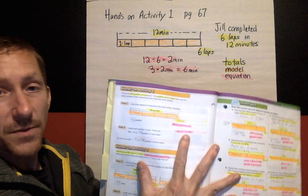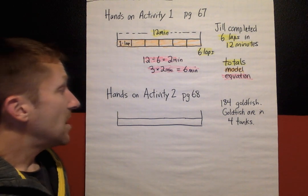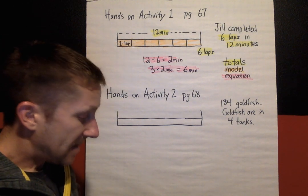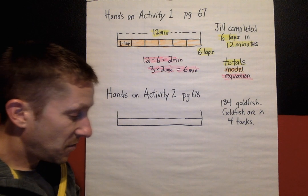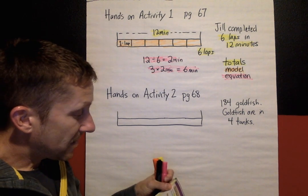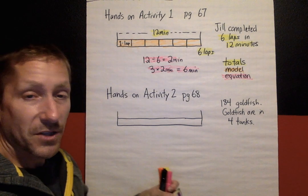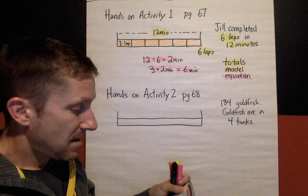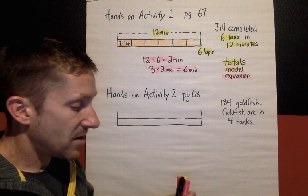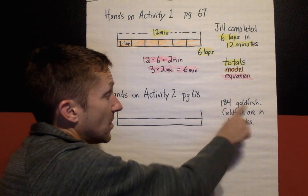Next, turn to the next page. We're going to look at Hands-On Activity 2. I'm going to read right from the text at the top. Hands-On Activity 2 — you can follow along in your book on page 68. It says: there are 184 goldfish at a pet store. The goldfish are in four tanks, each with the same number of fish. Determine how many fish are in three tanks.